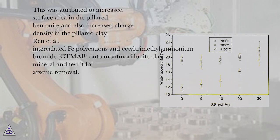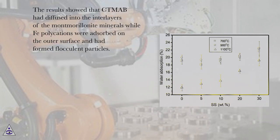Renn et al. intercalated Fe-polycations and cetyl trimethylammonium bromide (KMAB) onto montmorillonite clay mineral and tested for arsenic removal. The results showed that KMAB had diffused into the interlayers of the montmorillonite minerals while Fe-polycations were adsorbed on the outer surface and had formed flocculent particles.